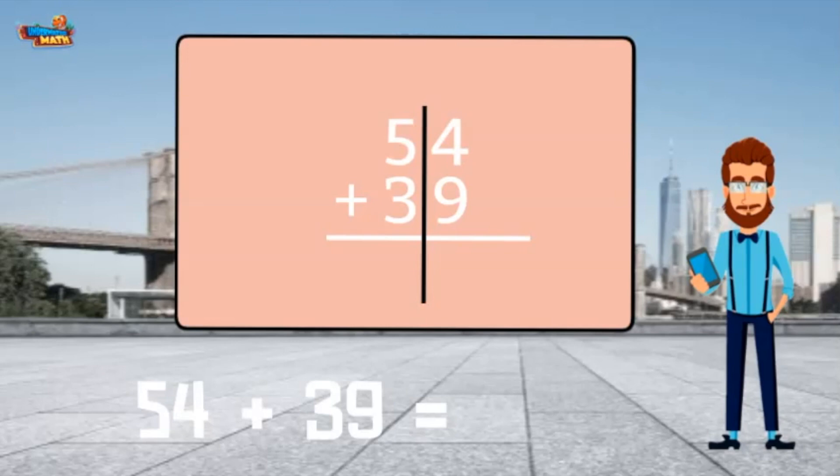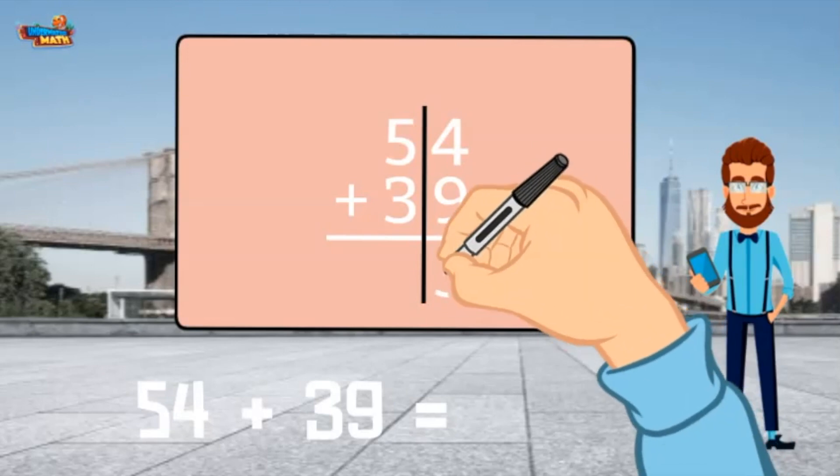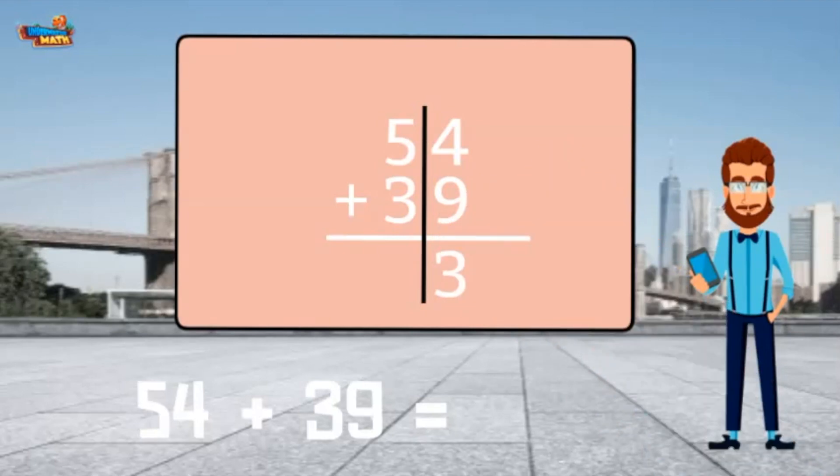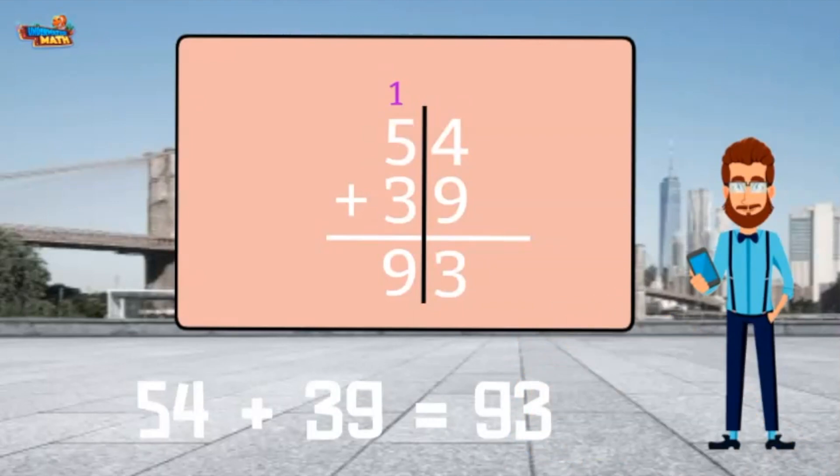Starting with the 1's place, we add 4 plus 9. It equals 13. The 3 goes in the 1's place, and the 1 is carried over to the 10's place. Add 5 plus 3 to get 8, and then add 1, which equals 9. 54 plus 39 equals 93.